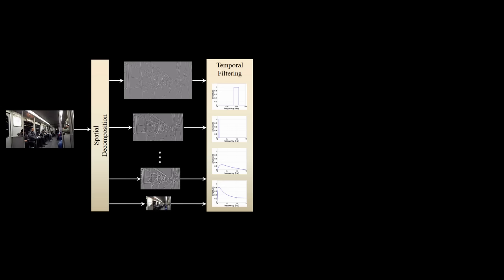First, we take a standard video sequence as input and decompose it into different spatial frequency bands using a Laplacian pyramid. We then take the sequence of pixel values over time and apply a temporal bandpass filter to extract the frequency band of interest.